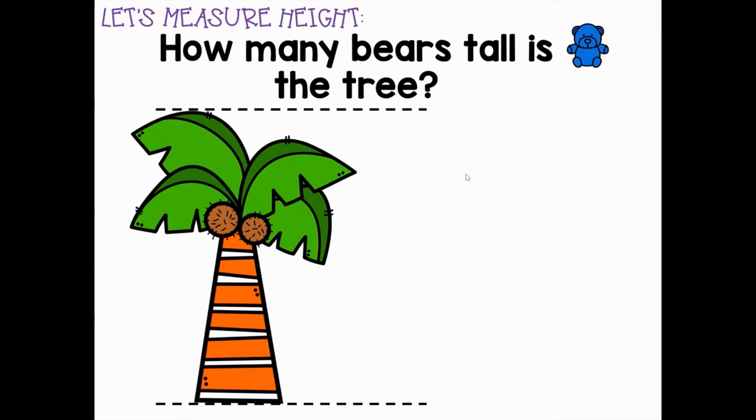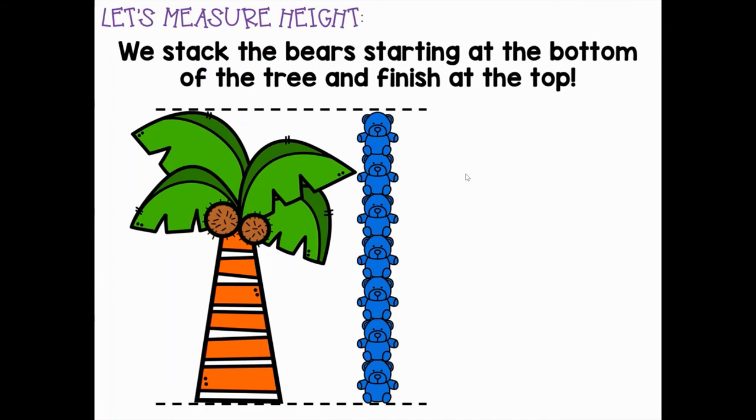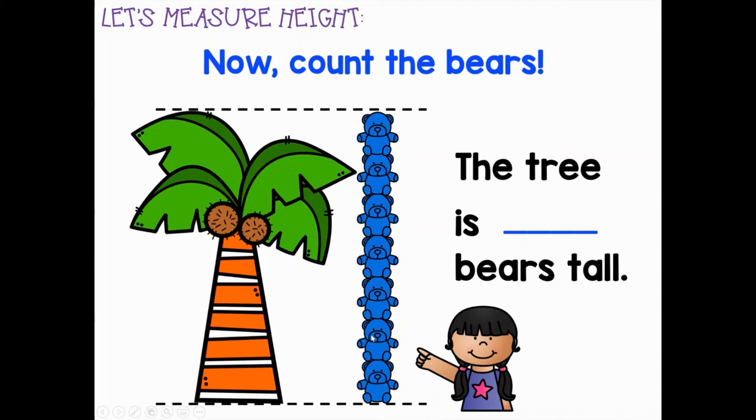How many bears tall is this coconut tree? Oh my goodness, that's a lot of bears. We had to start stacking them from the bottom and make sure that it finished at the top. Let's count how many bears together. One, two, three, four, five, six, seven. Oh my goodness, this tree is seven bears tall.